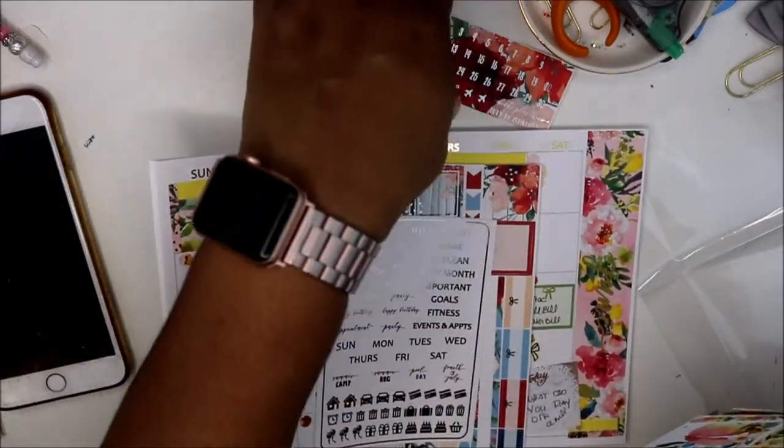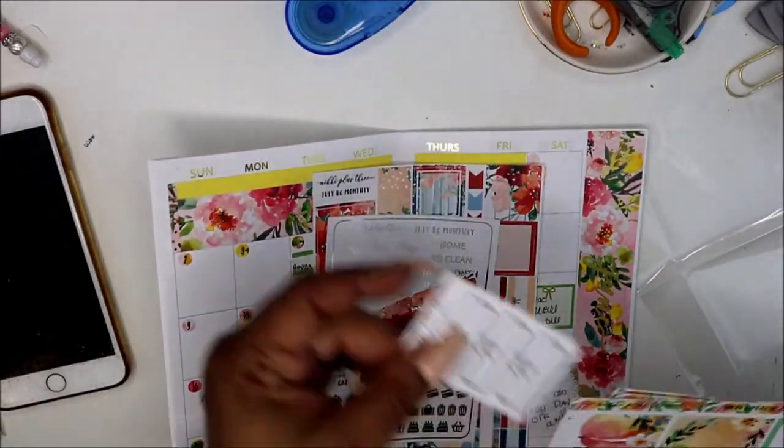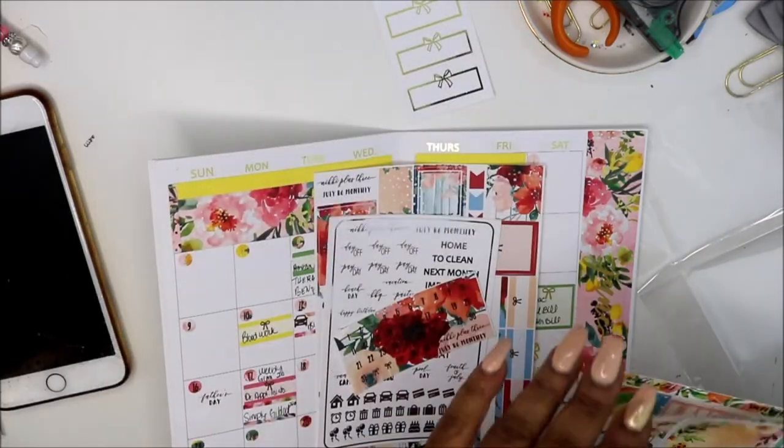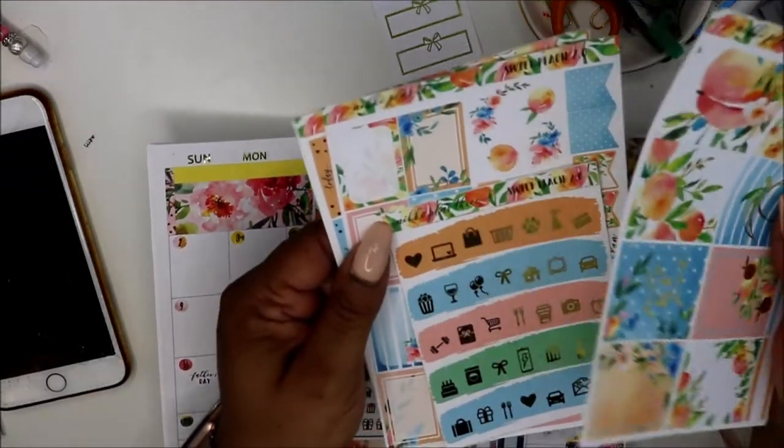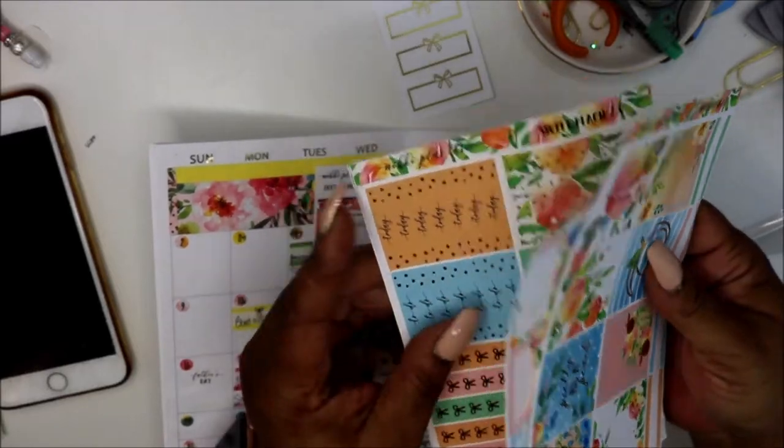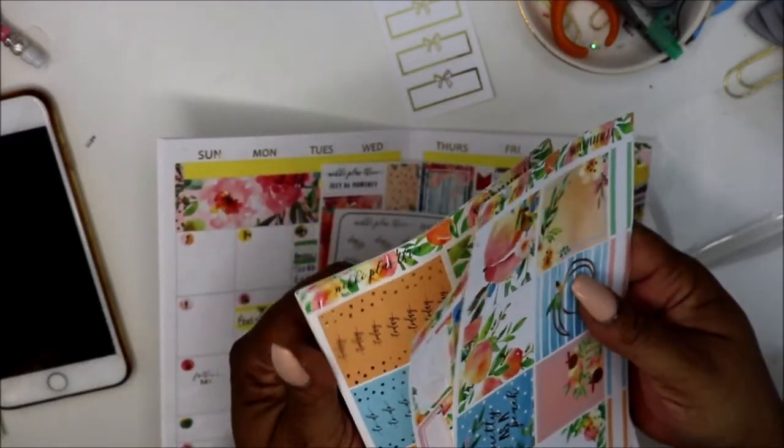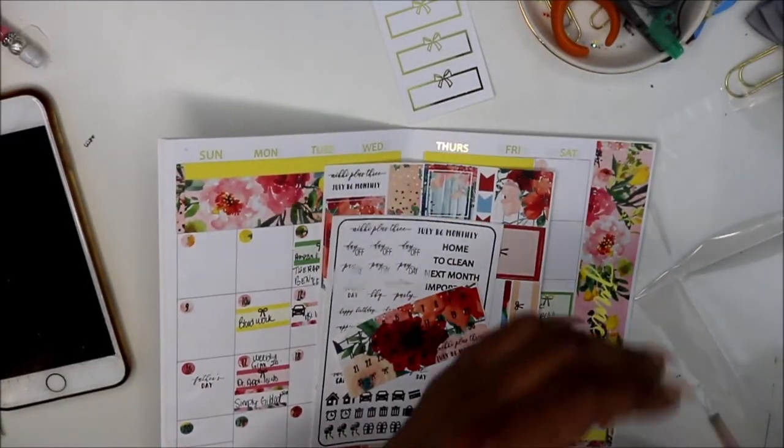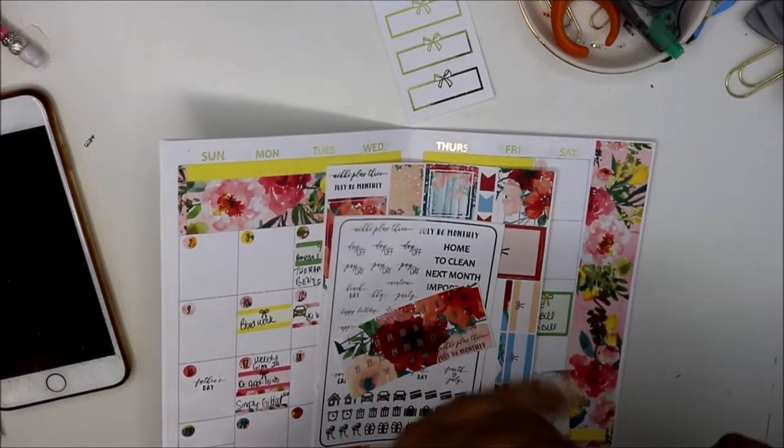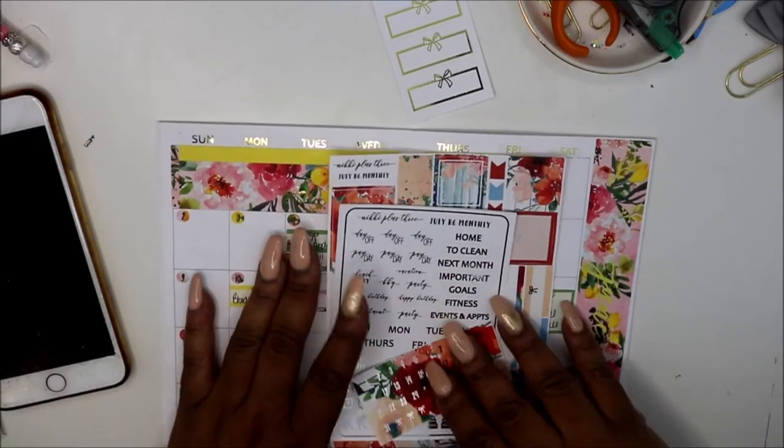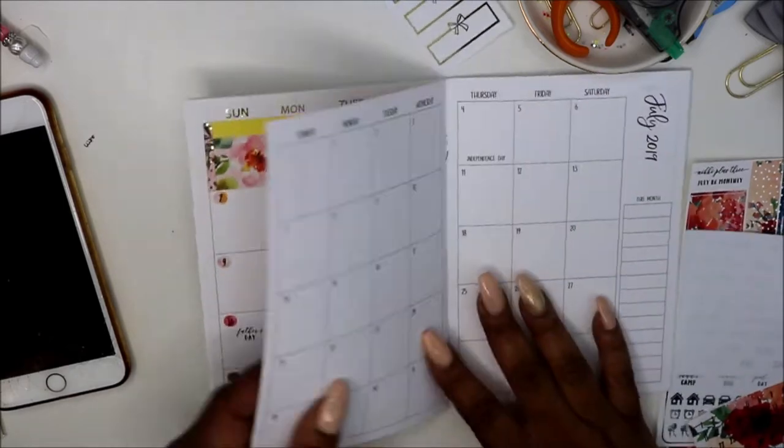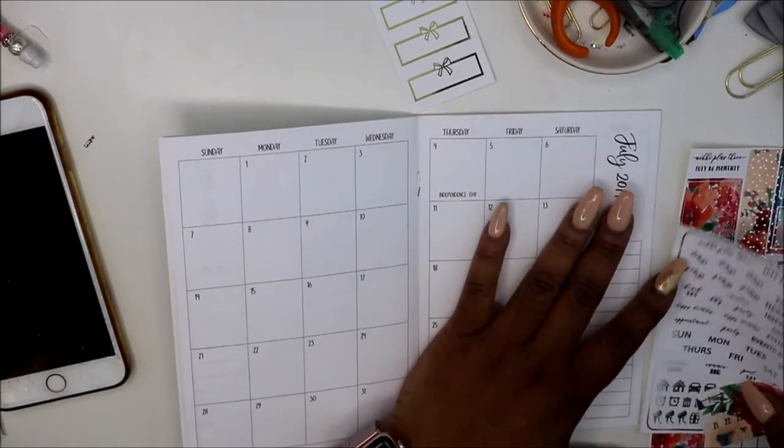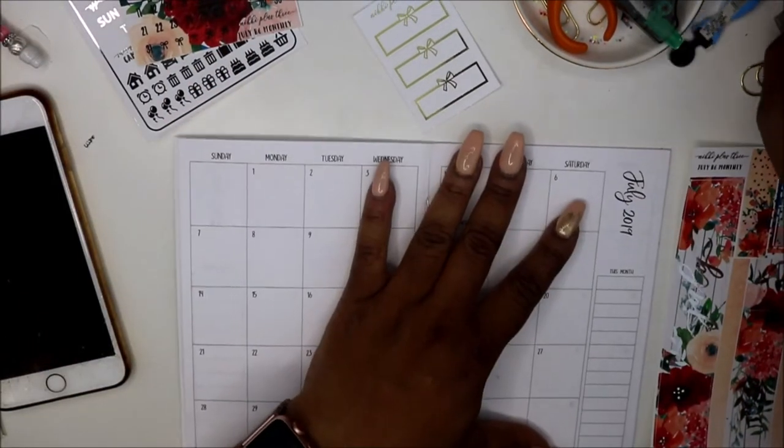This is what you get when you purchase the monthly. I ordered some extra stuff and she threw in a freebie here, and then this is going to be my weekly, this is the peaches, isn't it beautiful. I got my tweezers handy.